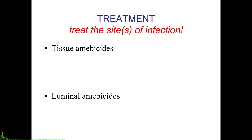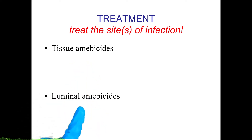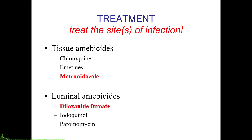The main premise in the treatment of amoebiasis is that you have to treat the site or sites of infection. This can be done using one or more types of amoebicides: tissue amoebicides and luminal amoebicides. Tissue amoebicides include chloroquine, emetines, and metronidazole — with metronidazole being the most common — while luminal amoebicides include diloxanide furoate, iodoquinol, and paromomycin.